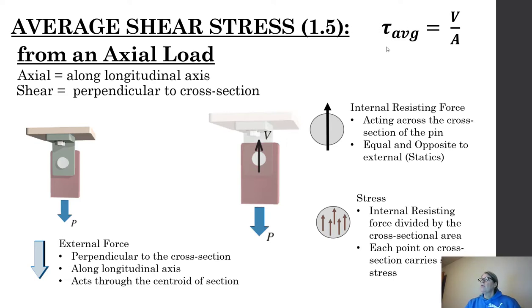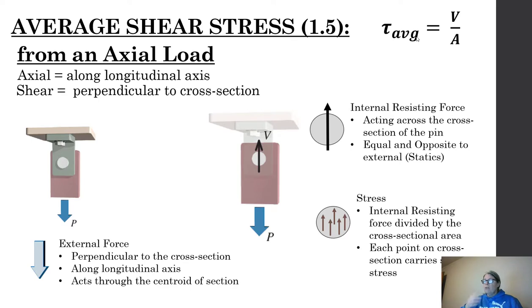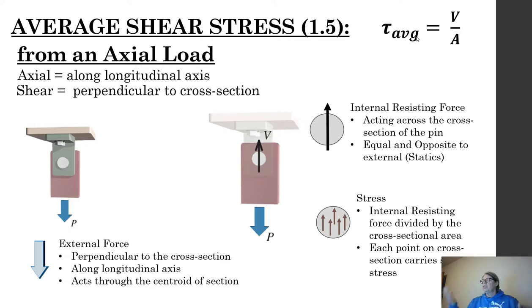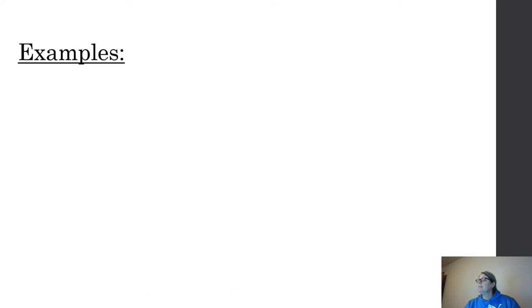Look at the formula in the upper right corner: shear average equals V over A. Shear stress is always called tau (τ); normal stress is always sigma (σ). When you look up material properties and want to find yield stress, ultimate stress, or allowable stress, you must first identify whether you're looking at a normal or shear stress — materials have different values for each. You don't want to pull the wrong one from the book.